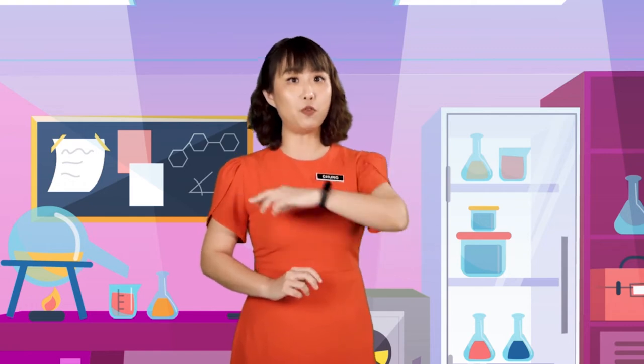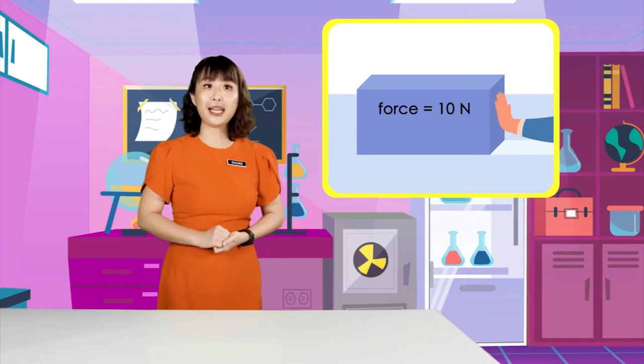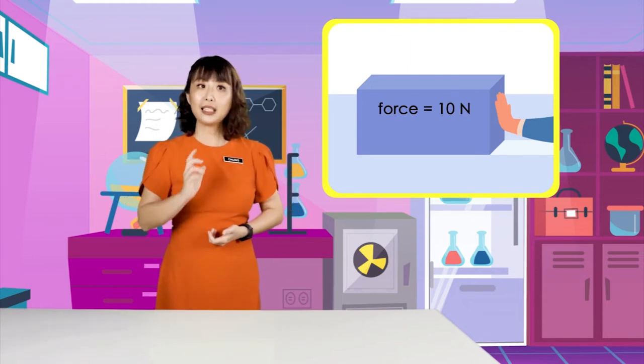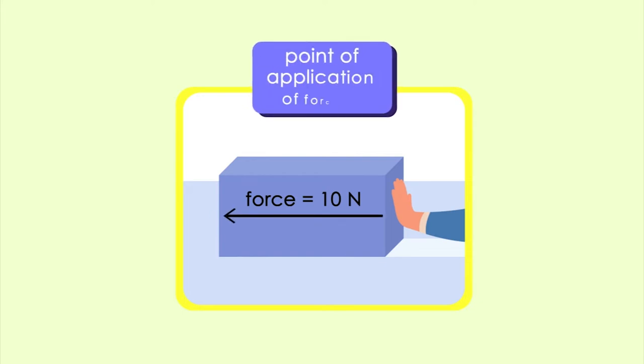Direction is the path or course of a given movement or moving body. It shows the point toward or from which an object is moving. This diagram shows a pushing force with a magnitude of 10 newtons acting on a box. The direction of the force is shown by the arrow, and the point of application of the force is the hand that exerts the pushing force onto the box.